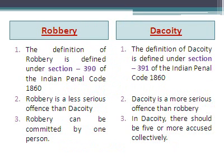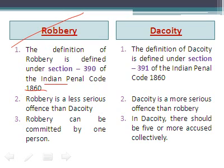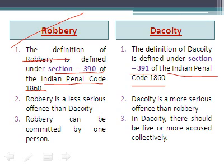The first point of difference is the definition. Robbery is defined under Section 390 of the Indian Penal Code 1860, while dacoity is defined under Section 391 of the Indian Penal Code 1860.